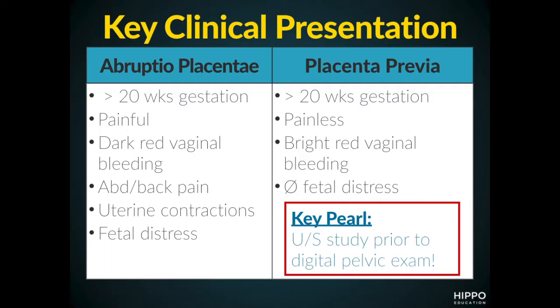Abruptural placenta is characterized by being a painful circumstance. We typically see dark red vaginal bleeding, also the presence of abdominal or back pain, uterine contractions, and fetal distress.